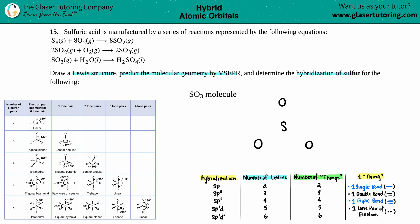Now let's put in the valence electrons. Oxygen and sulfur are in the same group — group 16 or 6A — so they both have 6 valence electrons. I'll count out 6 for sulfur, then 6 for each of the three oxygens.